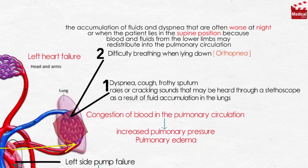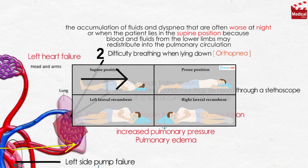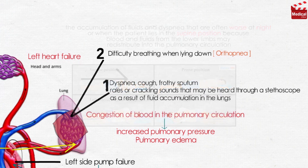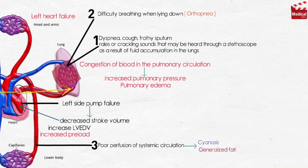The accumulation of fluids and dyspnea are often worse at night or when the patient lies in the supine position, because blood and fluids from the lower limbs may redistribute into the pulmonary circulation. Poor perfusion of systemic circulation may lead to cyanosis, as well as generalized fatigue and muscle weakness.